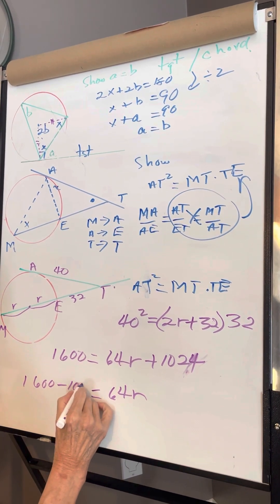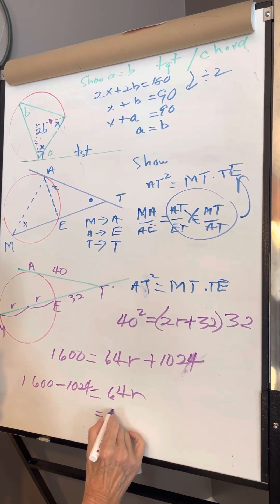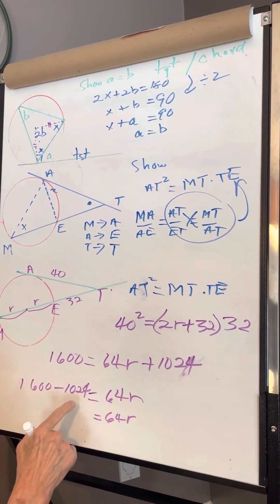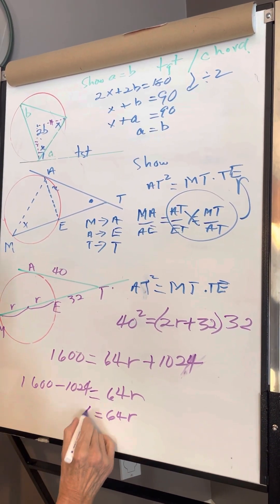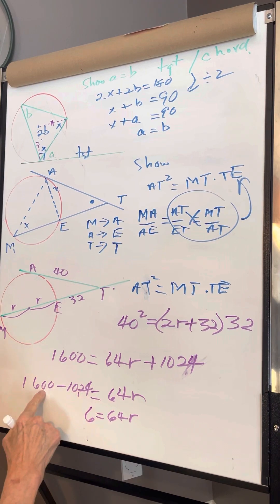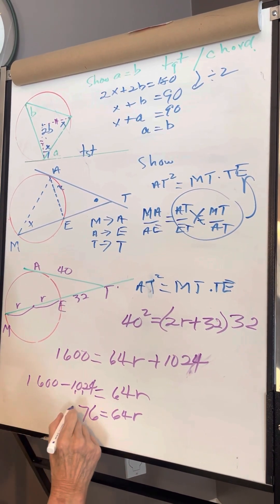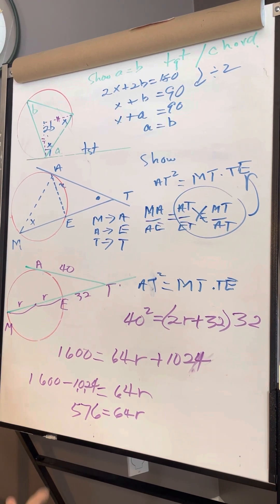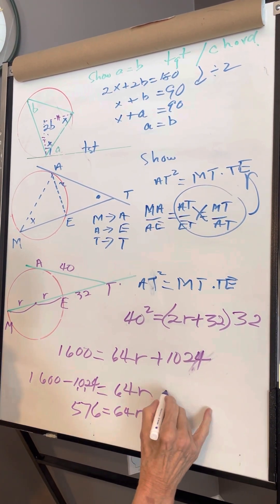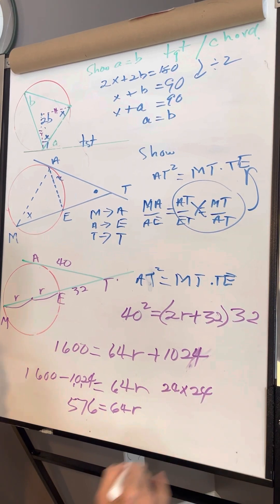So I do this: 4 and 6 is 10, carry 1. 3 and 7 is 10, carry 1. 1 and 5 and 5 is 6. So 576, which is 24 × 24. That's what I teach them, to know their square numbers up to 26.